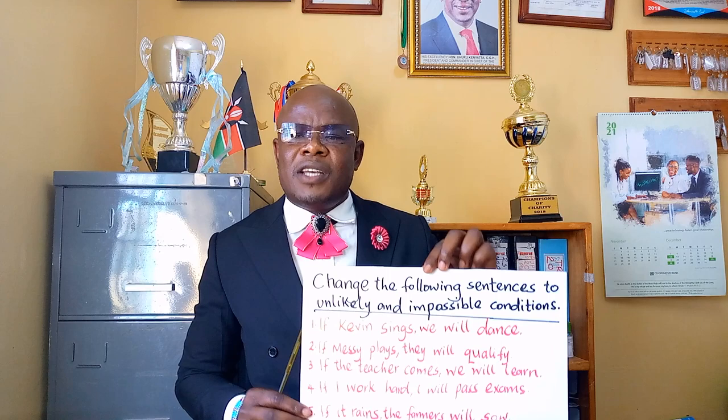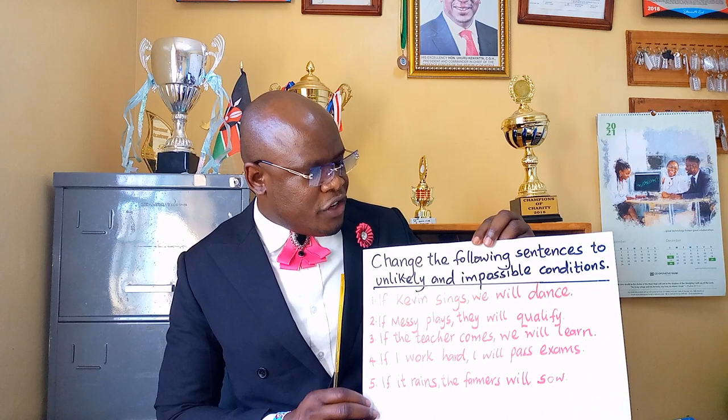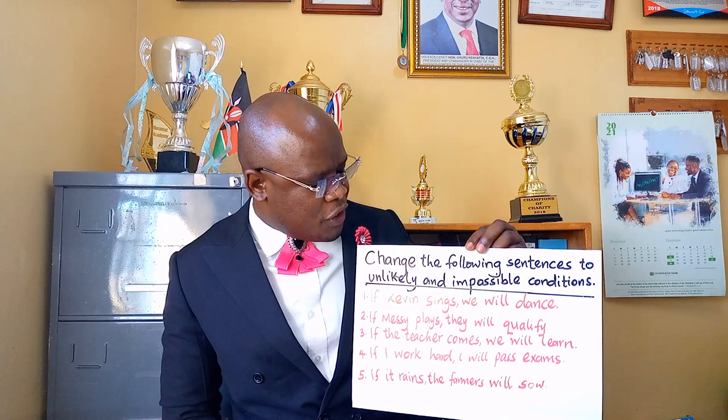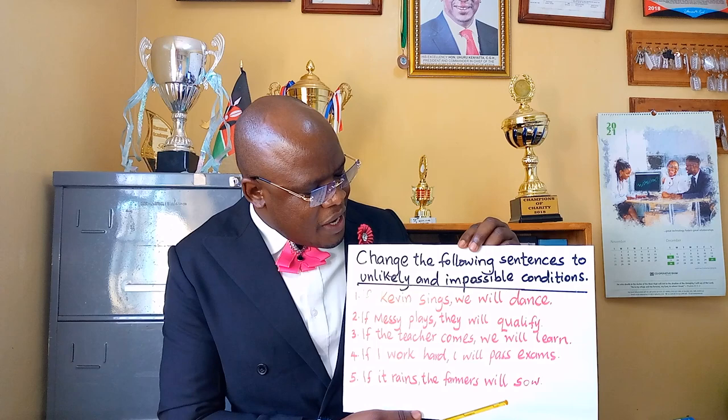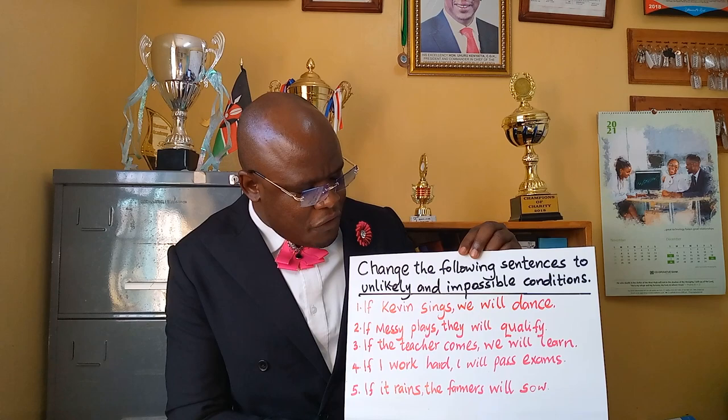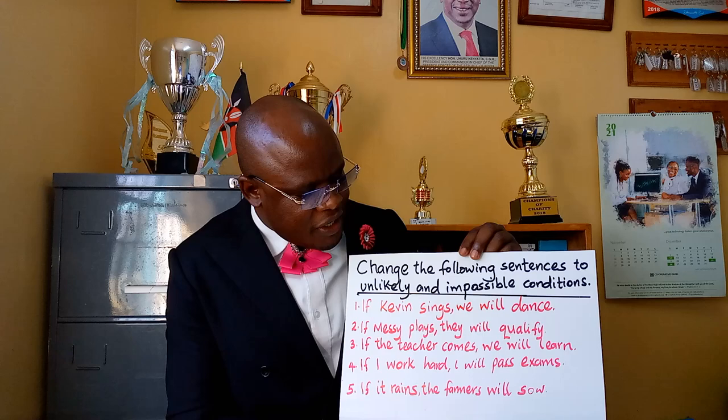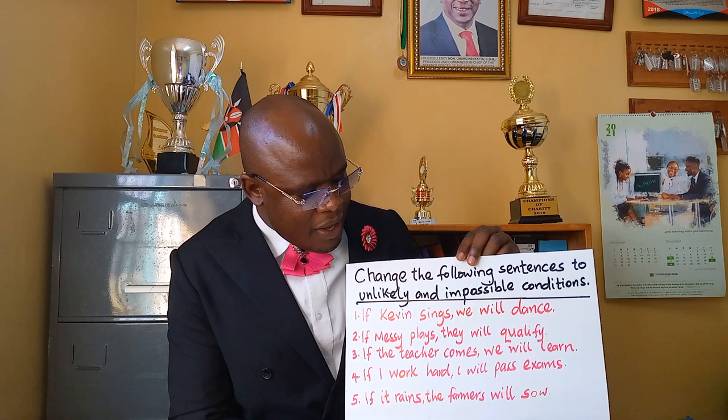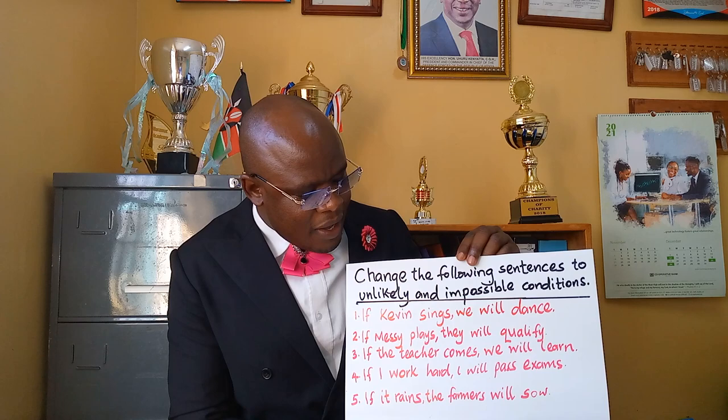Now that you know something about conditional sentences, I would want you to try yourself with the following. Change these sentences to unlikely and impossible conditions. Number one: if Kevin sings, we will dance. Number two: if Mercy plays, they will qualify. Number three: if the teacher comes, we will learn. Number four: if I work hard, I will pass the exam. Number five: if it rains, the farmers will sow.